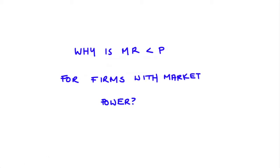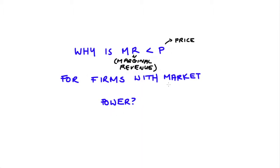Just to be clear, when I say MR I'm talking about the marginal revenue for a firm — that's the additional revenue that a firm gets if they increase their production by one. When I say P I mean the price that each unit of the good we're producing is being sold at. And when I talk about market power, what I'm thinking about is the sort of firms that have control over their price — so they're price makers rather than price takers.